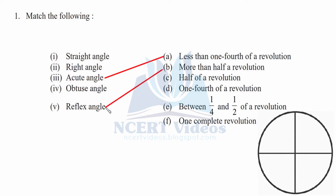Part c: half a revolution is very simple — it is a straight angle, so we connect 1 to c. Part d: one fourth of a revolution is again simple — it is a right angle, so we connect d with the second option.